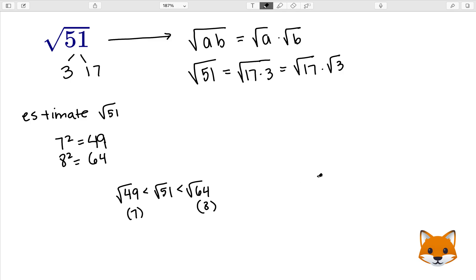So now if we wanted to just estimate to the nearest whole number, we can estimate the square root of 51 as 7 because 7 squared gives us 49 and that's a lot closer to 51 than 64 is. So we would round this to 7.